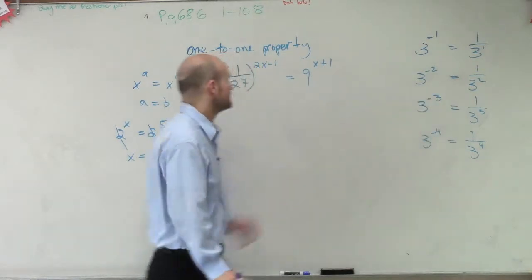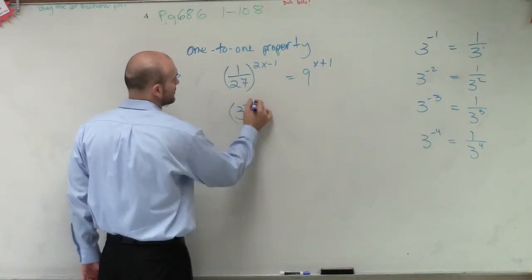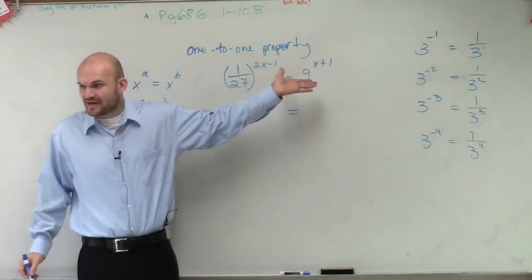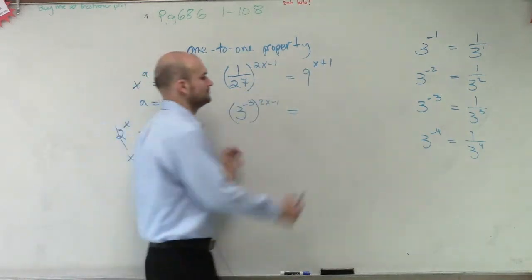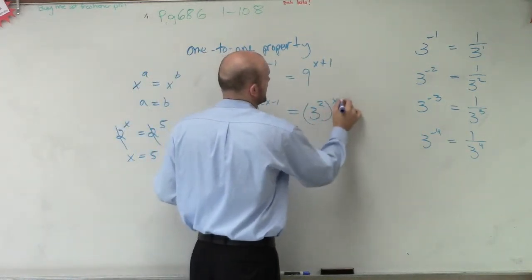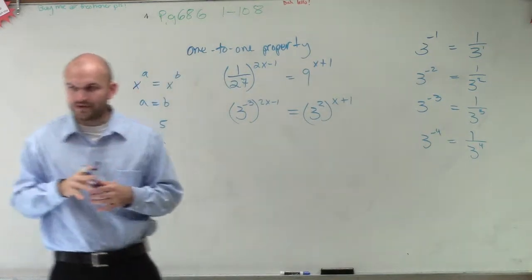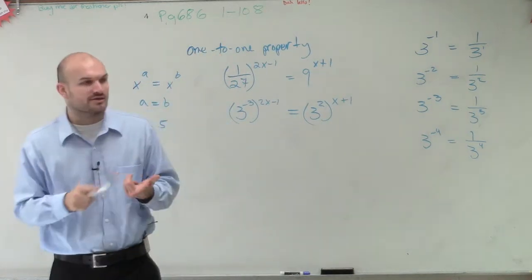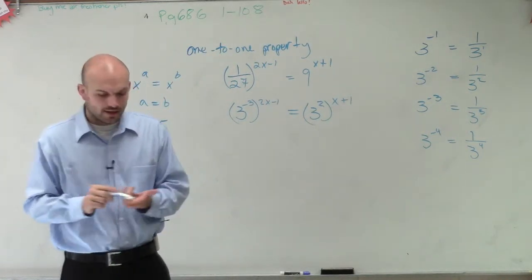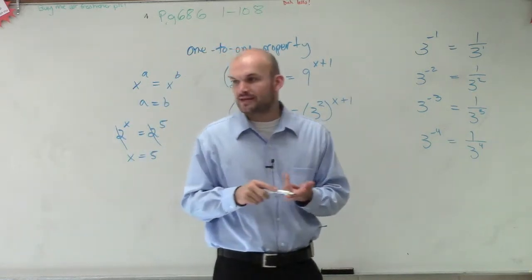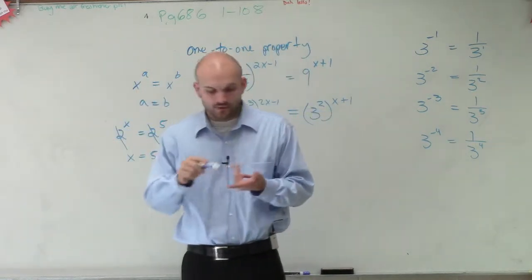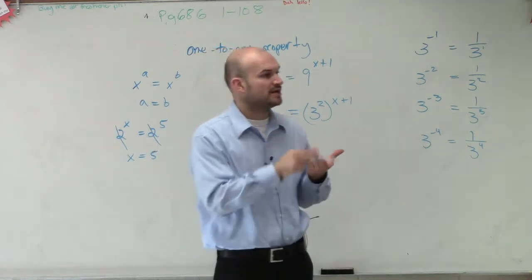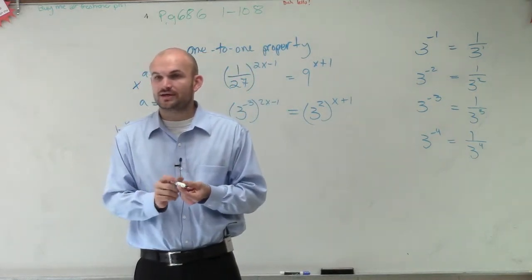Negative 3, right? So I could say this is 3^(-3) times (2x-1), and then can I rewrite 9 as a base 3? It'd be 3^2, right? Now, before I just start eliminating the bases, I want to make sure we remember something. If you guys remember properties of exponents, we talked about this when we started talking about the properties of logs, we went over the properties of exponents. When I have two exponents and I'm multiplying them, we add the powers, right? When I have two exponents that I'm dividing, we subtract the powers. When I take an exponent and raise it to another power, what do we do with the powers?